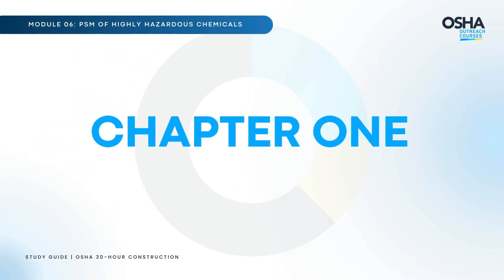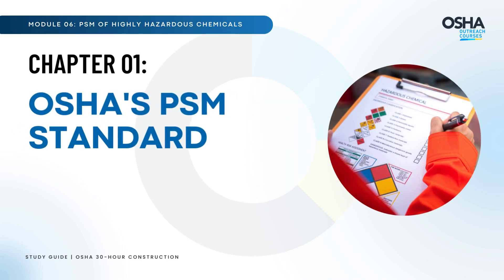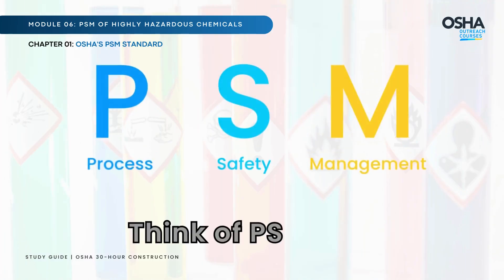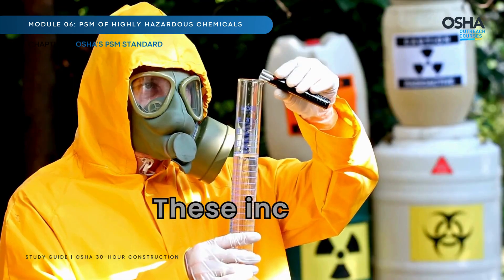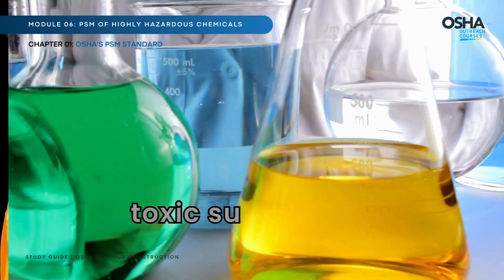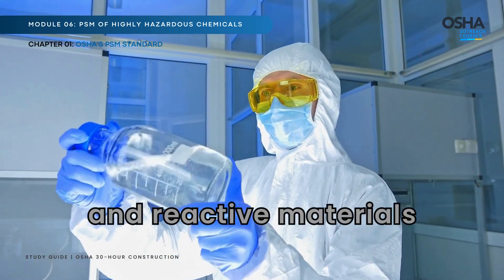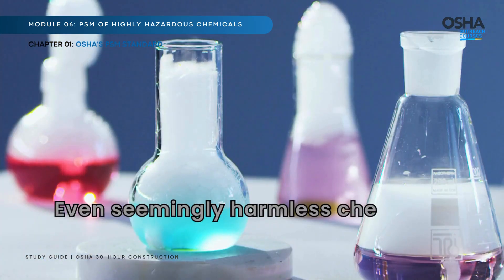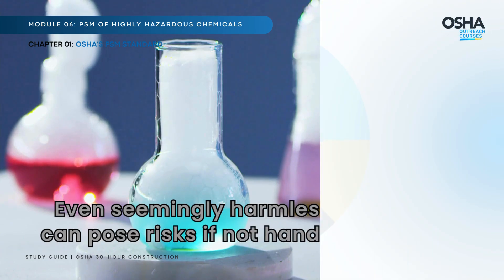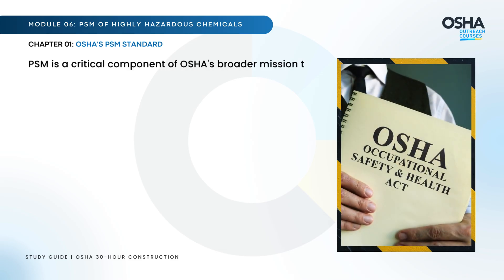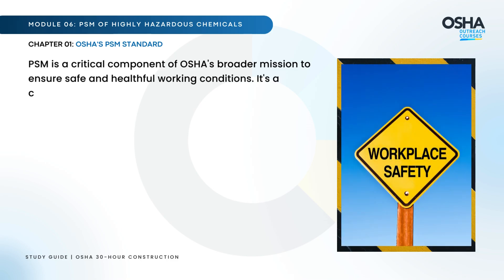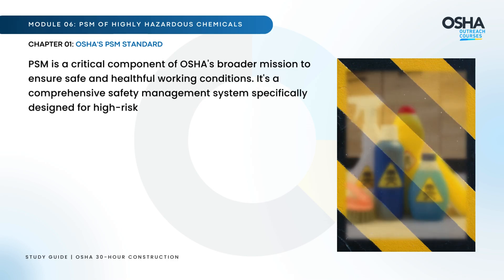Let's get started with Chapter 1: OSHA's PSM Standard. Think of PSM as a safety net for industries that handle dangerous chemicals, including flammable liquids, toxic substances, and reactive materials. Even seemingly harmless chemicals can pose risks if not handled correctly. PSM is a critical component of OSHA's broader mission to ensure safe and healthful working conditions — a comprehensive safety management system specifically designed for high-risk industries.